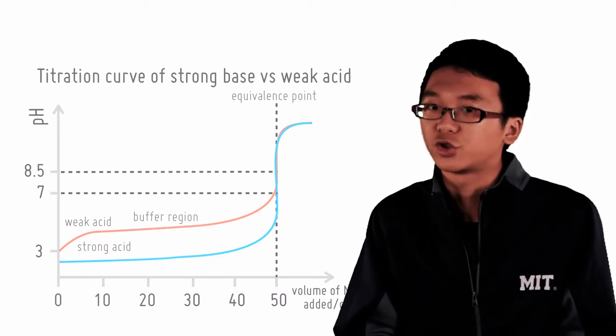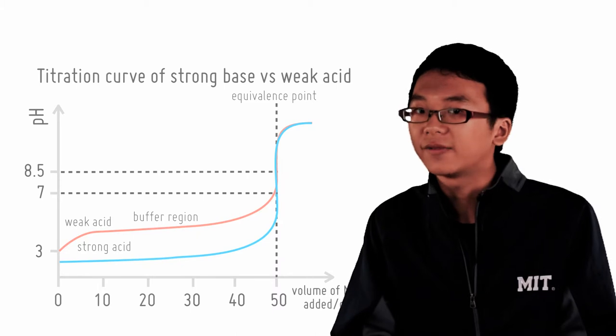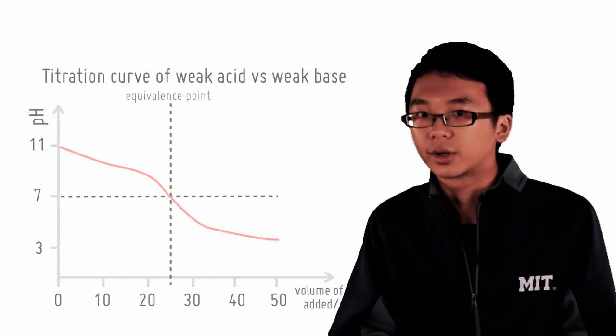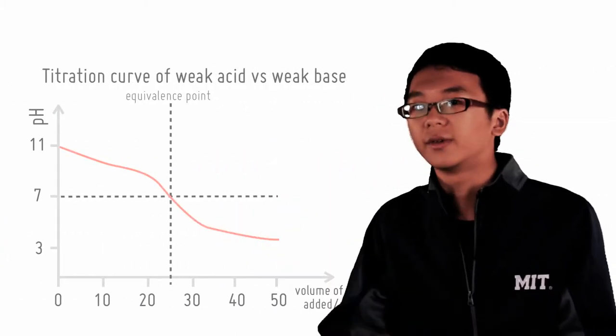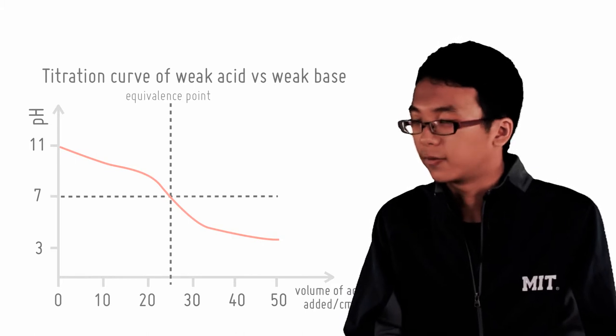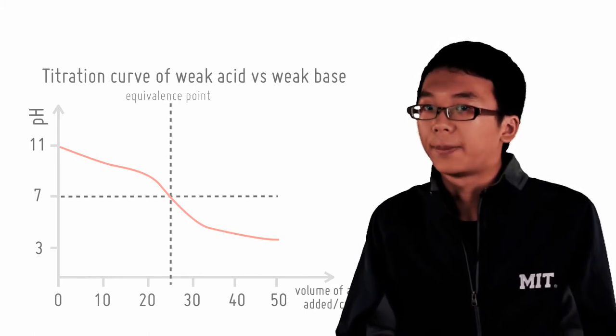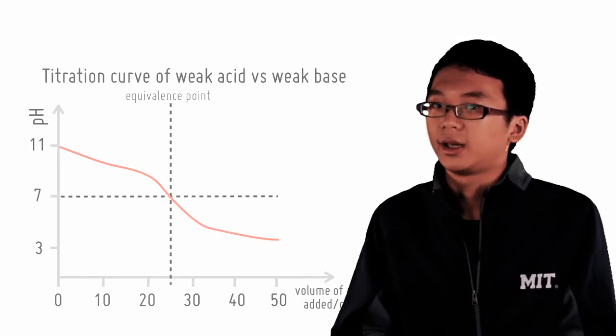Now the last type of titration that we have is that of a weak acid and weak alkali. And this is the titration curve. As you can probably see, the curve looks disgusting. You can barely tell where the equivalence point is if I didn't tell you.